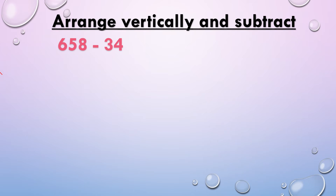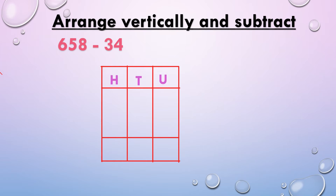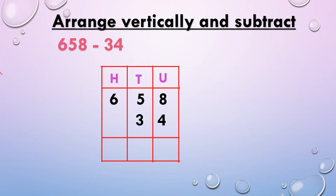Next, 658 minus 34. First we draw the columns, then write hundreds, tens, and units. We write the numbers: 658, then 34 starting from tens place and units place. We write the subtraction sign. Now we subtract: 8 minus 4, we get 4.